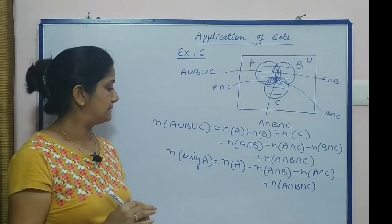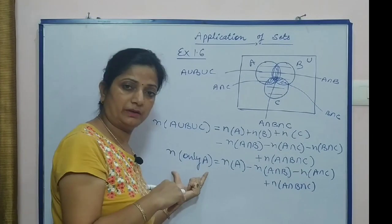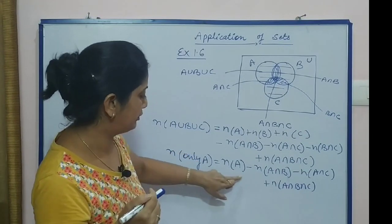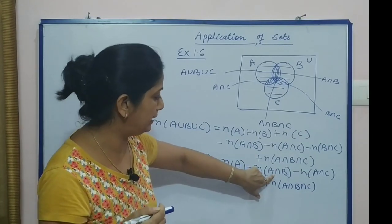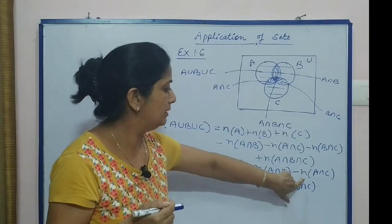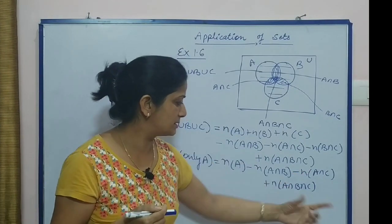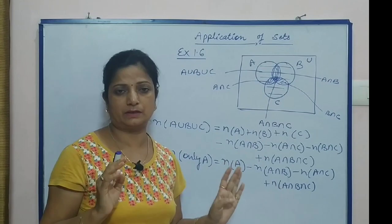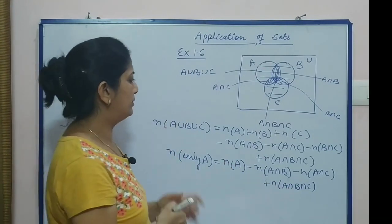Similarly, if we need to find only B: number of B minus number of A intersection B, minus number of B intersection C, plus the all-three intersection. In the same way we find only C.